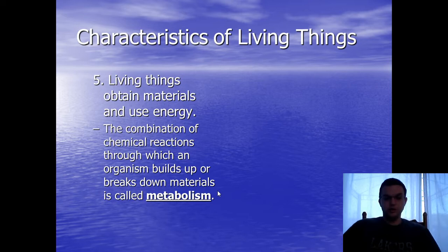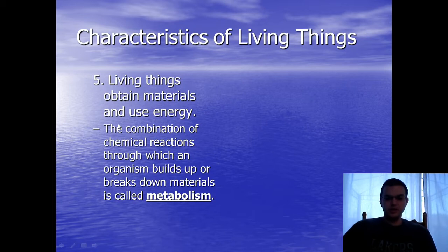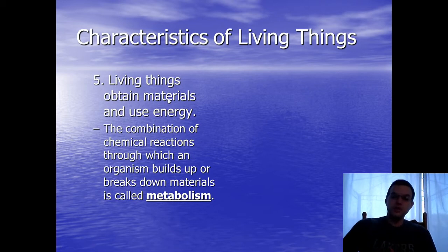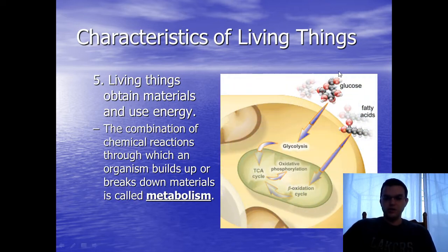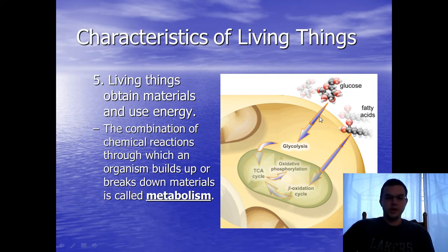Living things have to be able to obtain materials and use energy — that's what metabolism is. Metabolism is the combination of chemical reactions that happen within your cells. The majority of those reactions deal with obtaining necessary nutrients and getting energy from things brought into the body. For plants, it means taking energy from the sun to make food and then getting energy from that food. This process happens inside a structure called the mitochondria.